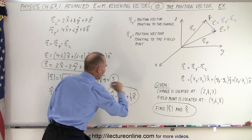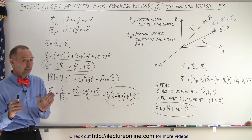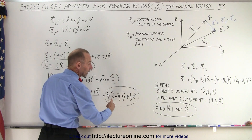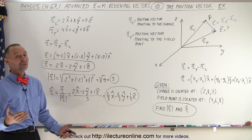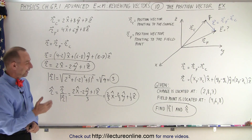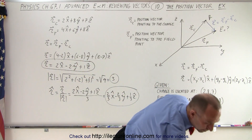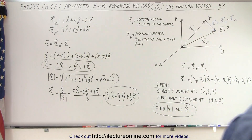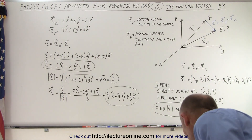And there's the unit vector pointing from the charge to the field point. Since it's a unit vector, if you square each component and add them together you get a magnitude of 1, which confirms it's correct. That is how it's done. Note: I interchange x, y, z notation with i, j, k notation because some people prefer one over the other, so I just go back and forth.